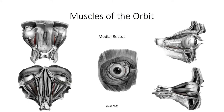Next up is the medial rectus muscle. The muscle inserts on the medial aspect of the sclera and is purely an adductor of the eye. The last of the four rectus muscles is the lateral rectus. Attaching opposite the medial rectus muscle, it is a pure abductor of the eye. This is also the first muscle in our list that is not innervated by the oculomotor nerve; the abducens nerve is responsible for its innervation.